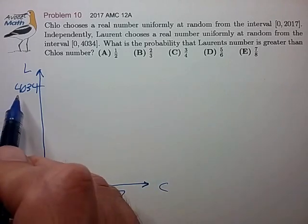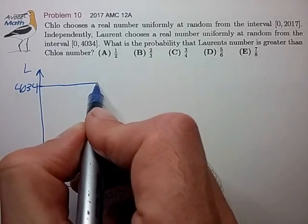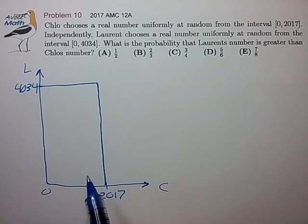So right off the bat, you should see that 4034 is double 2017, and taken together, these two points, chosen independently, form a probability rectangle.